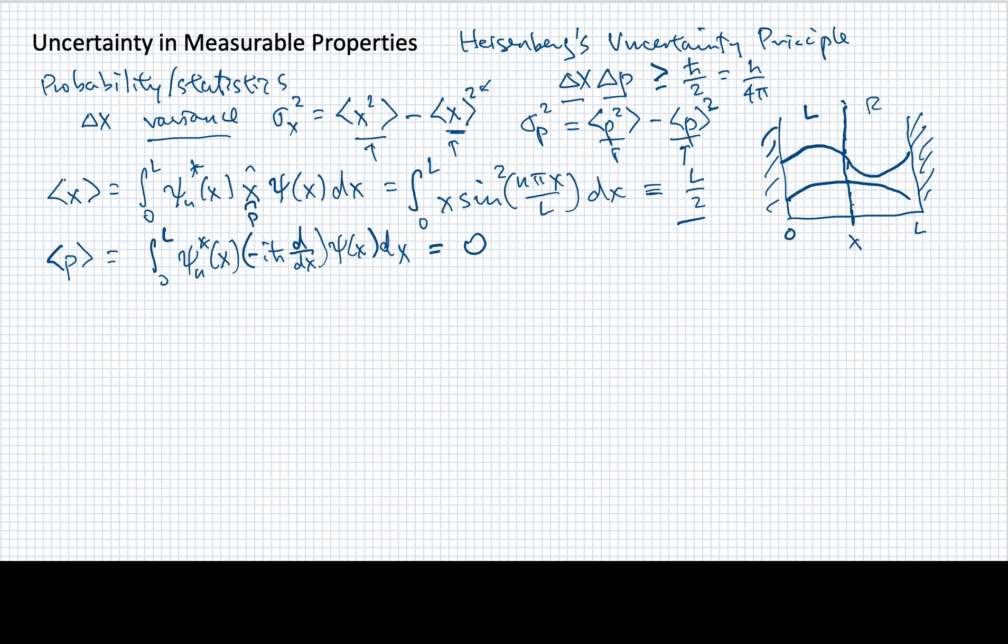And again, this sort of makes sense. It is equally probable for the particle to be moving this direction as it is to be moving that direction. So the average momentum over this box must be 0.